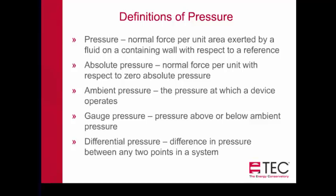Absolute pressure is a normal force per unit with respect to zero absolute pressure. Ambient pressure is the pressure at which a device operates — wherever you're at, that's the ambient pressure. Gauge pressure refers to measuring something above or below ambient; for example, tire pressure is read in PSIG — pressure with respect to the ambient area versus the inside of the tire. Differential pressure is simply the difference between any two points.